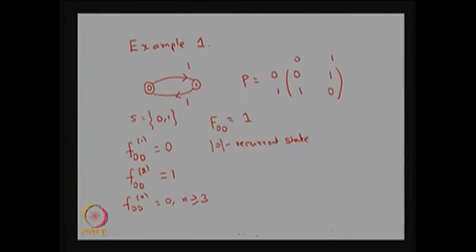Similarly, performing the same exercise for state 1 — computing f_{1,1}(1), f_{1,1}(2), and so on, then summing — we find F_{1,1} = 1. We conclude that state 1 is also a recurrent state.